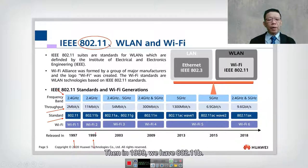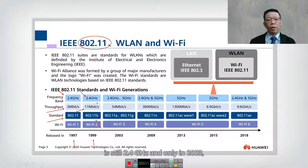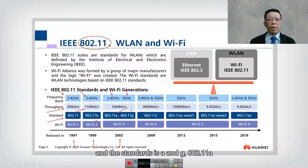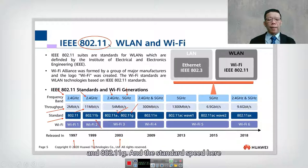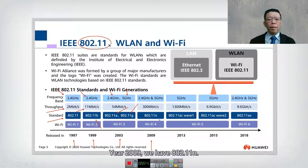In 1999, we got 802.11b with 11 megabits per second, still at 2.4 gigahertz. In 2003, we introduced both 2.4 gigahertz and 5 gigahertz with 802.11a and 802.11g, achieving a throughput of 54 megabits per second.